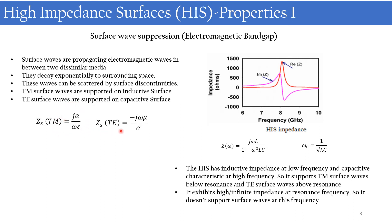And if the surface has a capacitive impedance given by Z_TE = −jωμ / α, the surface will be supporting TE surface waves. So TE surface waves are supported on capacitive surfaces.